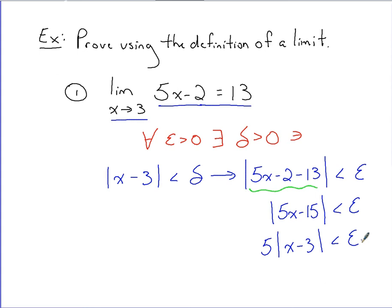At which point, you're trying to get this absolute value by itself, because we're trying to make it look like what we have over here. Understanding that if we have the absolute value of x minus 3 over here less than delta, whatever we solve for and get over here, we get the absolute value of x minus 3 less than epsilon over 5.